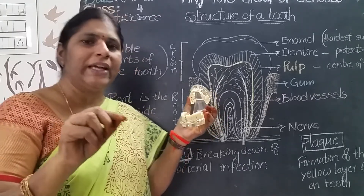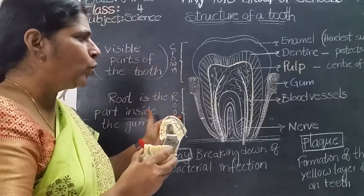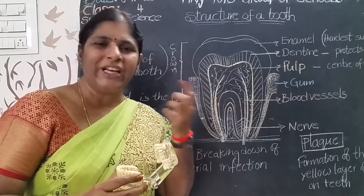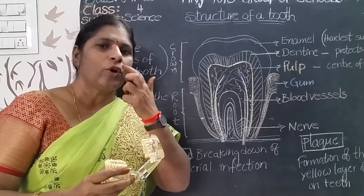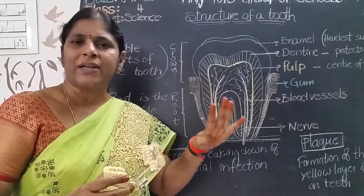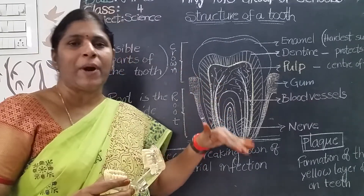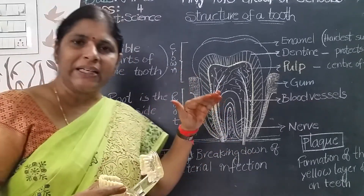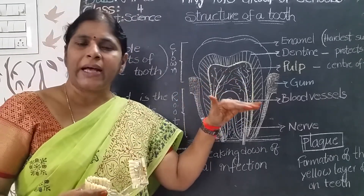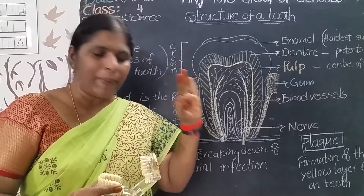So, every tooth has two parts: crown and root. Crown is the visible part of the tooth — when we smile, we can see the crown. Root grows inside the gum and we cannot see it. Now, every tooth also has three inner layers. What are the inner parts of the tooth? Every tooth has three layers: enamel, dentine, and pulp.